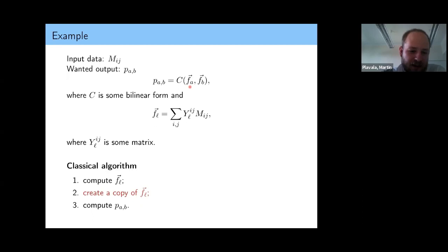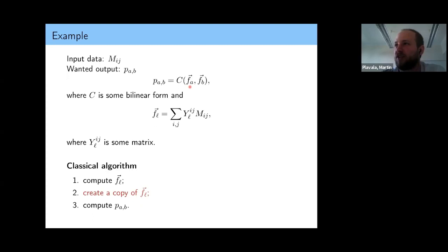Now there's the problem: in quantum theory you cannot just call a variable twice, because once you do something with it, it's not the same variable anymore — you can only use it once. This is a quite interesting exercise in classical programming: try to program something where you call every variable just once, and after calling it just destroy it. This sooner or later becomes quite annoying, but this is what we have to deal with in quantum theory. It's one of the trade-offs we pay for other speedups.